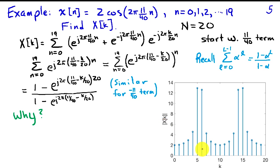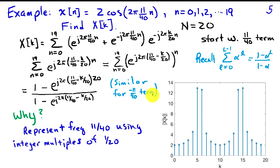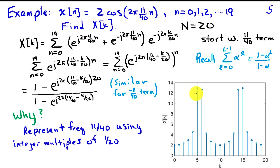The magnitude spectrum is dominated by components near k equals 5 and 6, as well as k equals 14 and 15. The reason we have the largest energy there but components at all frequencies is that the DFT tries to represent x of n using sinusoids at integer multiples of 1 over 20 cycles per sample. Our sinusoid's frequency is 11/40, which is not an integer multiple of 1/20, so all possible frequencies are needed. Since 11/40 lies between 5/20 and 6/20, the largest values appear near those frequencies — the sinusoid being represented is closest to them.